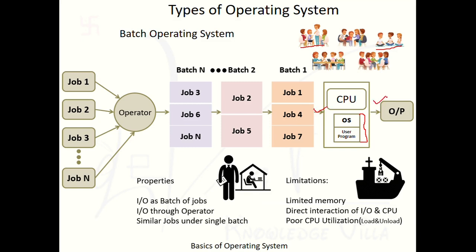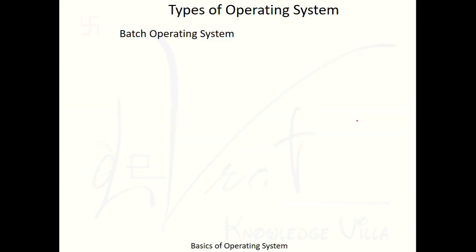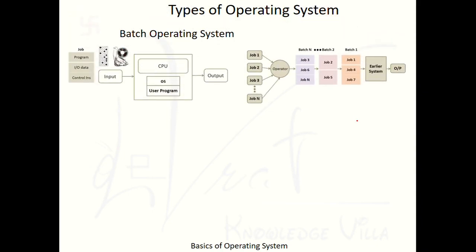Another limitation is poor CPU utilization. As discussed in the ship loading and unloading example, much of the CPU's time is wasted during the loading and unloading process. Whenever I/O devices are loading batches into the processor or output devices are unloading jobs from the CPU, the CPU remains idle. At that time the CPU could serve another process, but that is not possible because load and unload is carried out by the I/O devices.